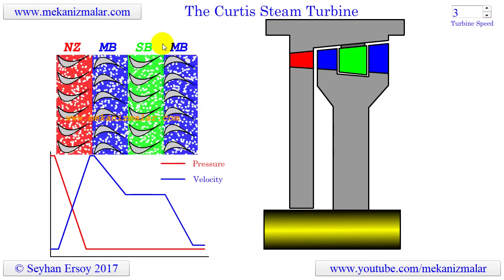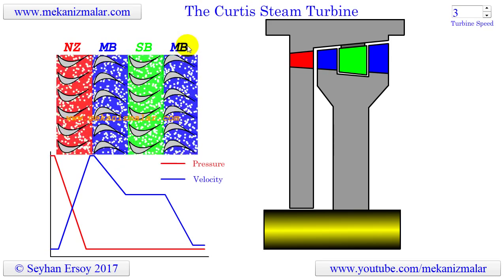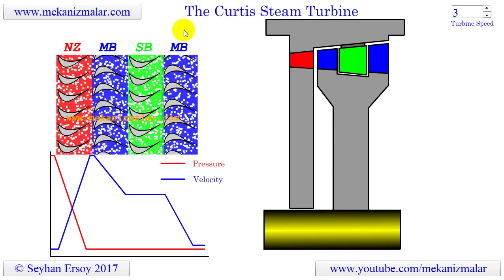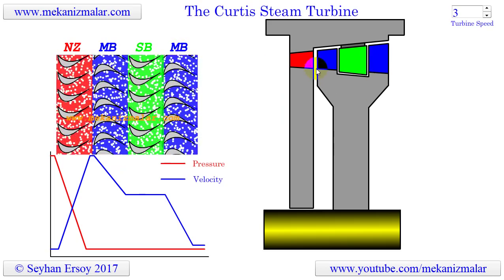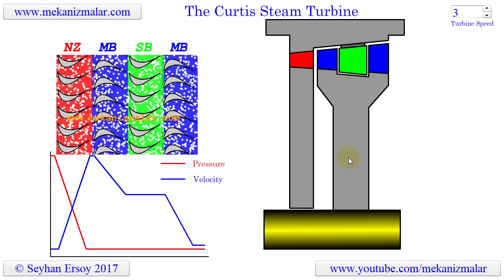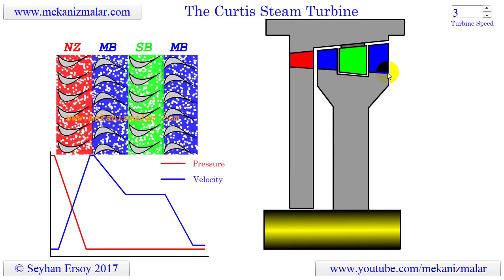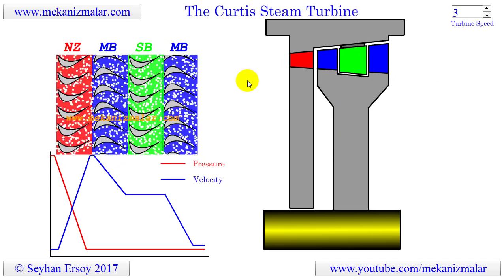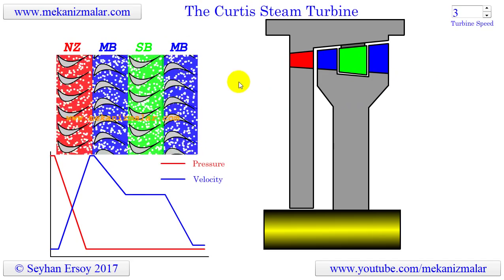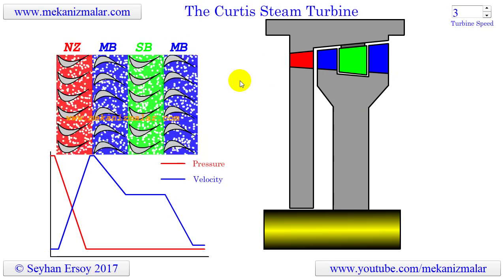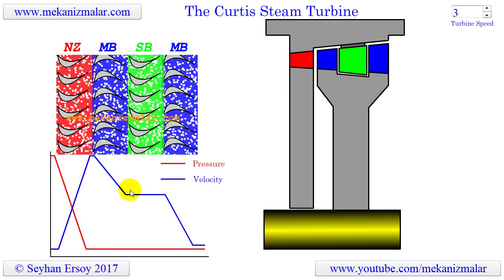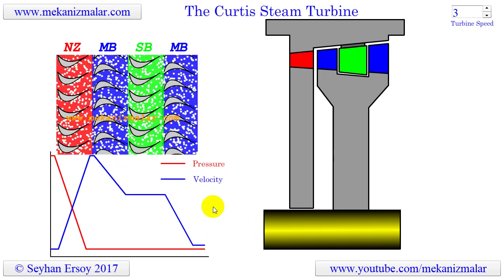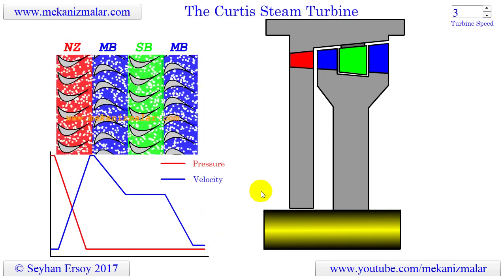The final stage is another moving blade section connected to the same disc as the first moving stage blades. Here there are only two moving blade stages, but it could be two, three, or four. More moving stages mean less velocity reduction in a given stage, which in turn reduces the rotation speed of the rotor where the moving blades are attached.